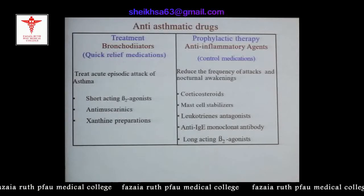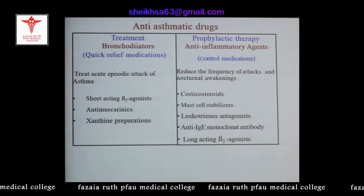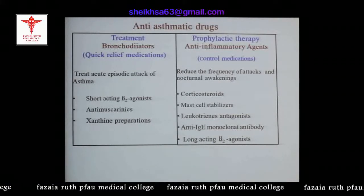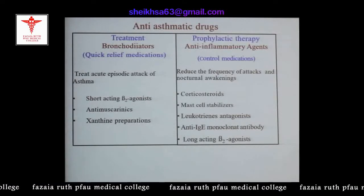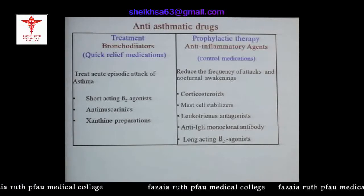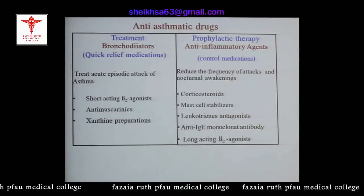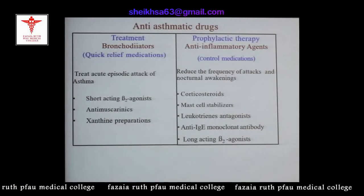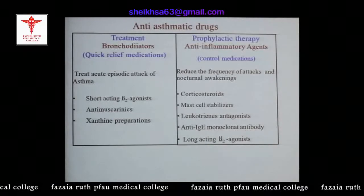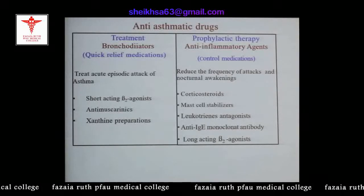Group one drugs are called quick relief medications or bronchodilators. They treat acute episodic attacks of asthma and include short-acting beta-2 agonists, antimuscarinics, and xanthine preparations. The second group is used for prophylaxis of bronchial asthma — these are called anti-inflammatory drugs or controller medications. They reduce the frequency of attacks and nocturnal awakenings.